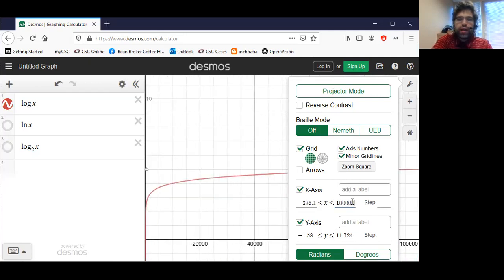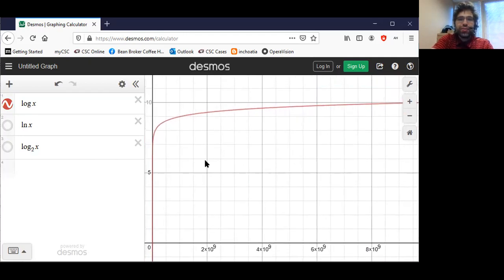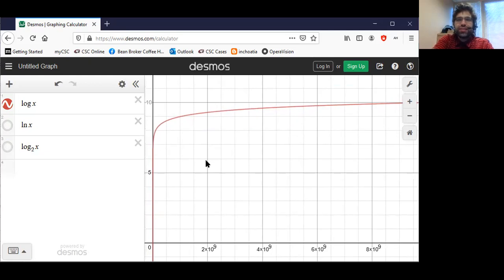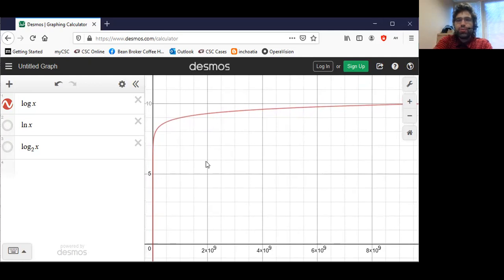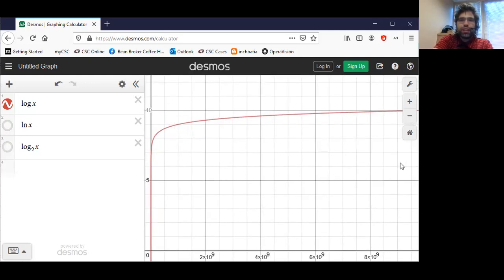If we let x go all the way out to a million, the logarithm is still hovering below 10. So this is not exactly the fast growing function people seem to believe it is. I mean, we are in the billions and x is around 10.